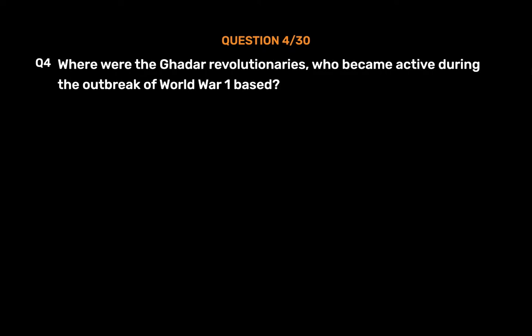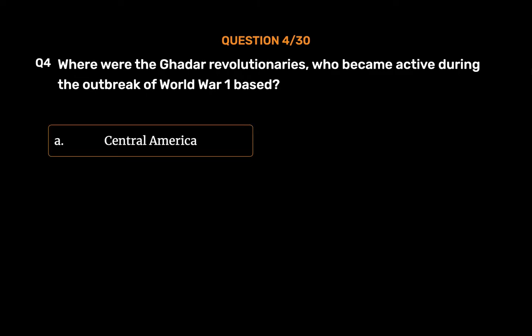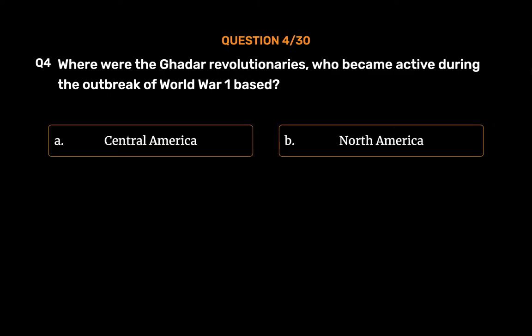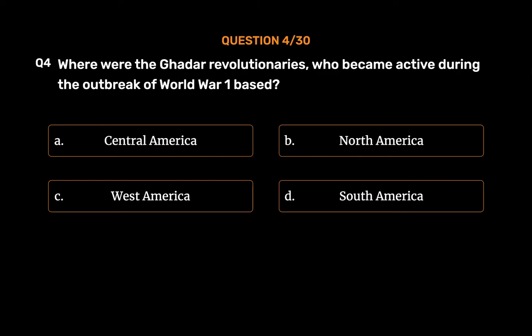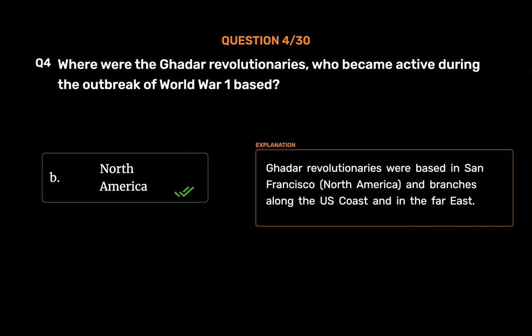Question No. 4. Where were the Gadda revolutionaries, who became active during the outbreak of World War I, based? Option A, Central America; Option B, North America; Option C, West America; Option D, South America. The correct answer is Option B, North America. Gadda revolutionaries were based in San Francisco, North America, and had branches along the U.S. coast and in the Far East.